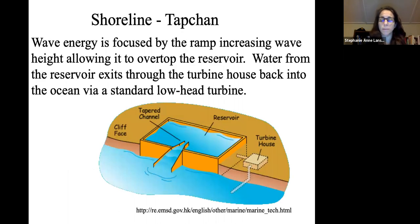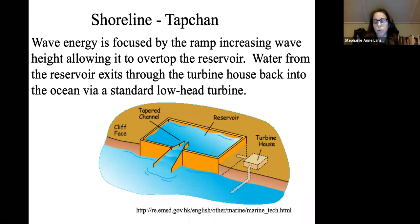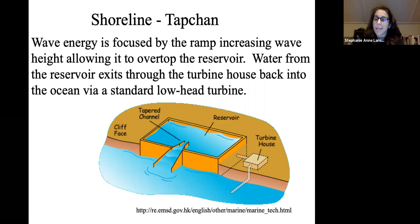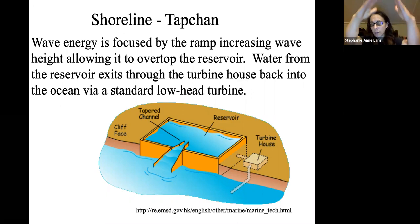Our first shoreline on-shore type is basically hydropower. The wave is focused and tapered up a ramp, and as it comes up it falls over into a reservoir. It overtops this reservoir and then exits through a turbine back into the ocean — a low-head turbine. So it's essentially low-head hydropower: we create gravitational potential, it floods out through the turbine, and then the next wave comes in.